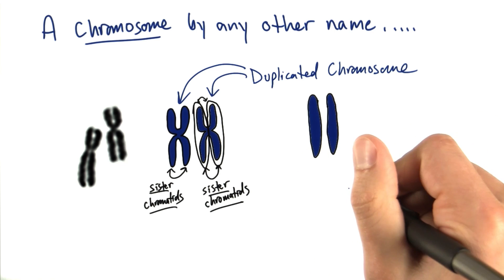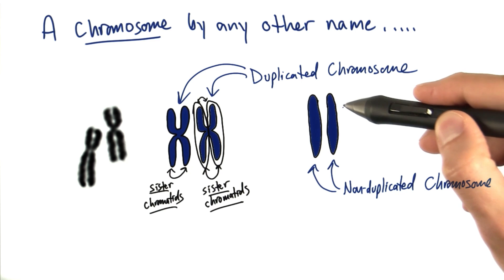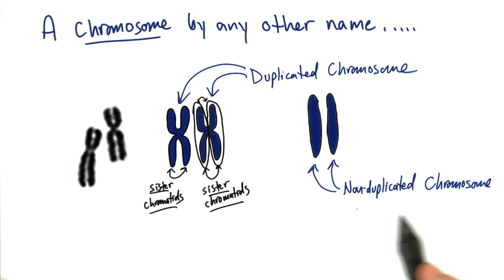However, most of the time, chromosomes look like this instead. They don't look like an X, they're just one linear molecule. We call this a non-duplicated chromosome. This is what the pair typically looks like in a cell.